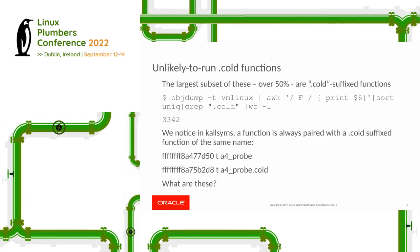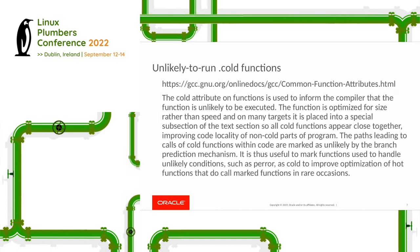The next family of missing functions are those suffixed with '.cold'. You can see in kallsyms that a lot of functions are paired with a '.cold' version of the same function. I'm not a compiler person, so if anything here looks wrong please do interject, as the documentation is kind of hard to find and I may have missed some points.